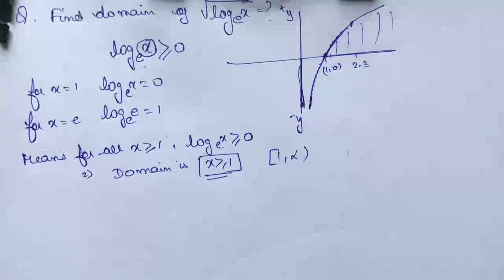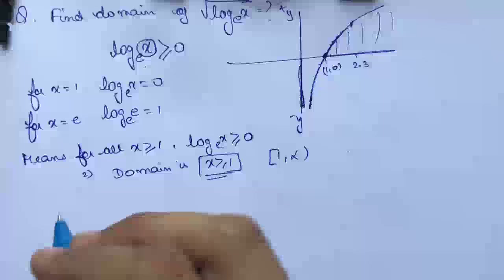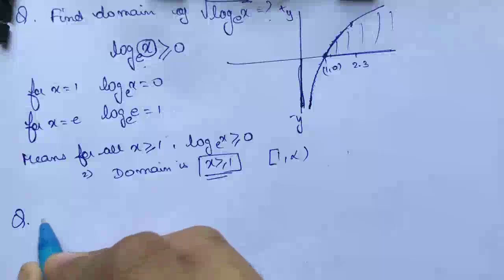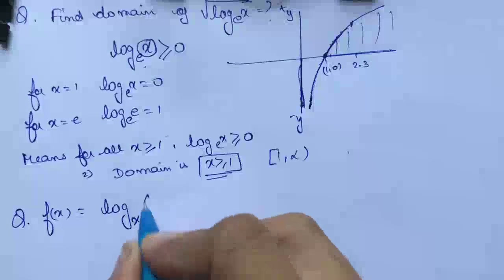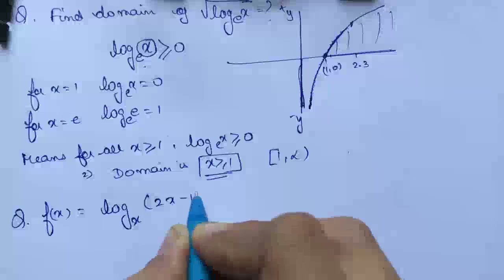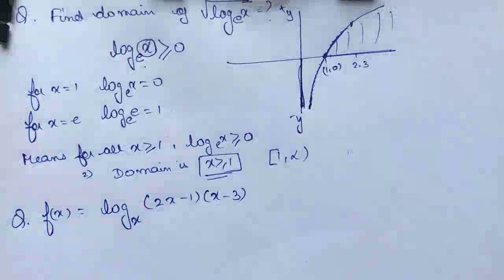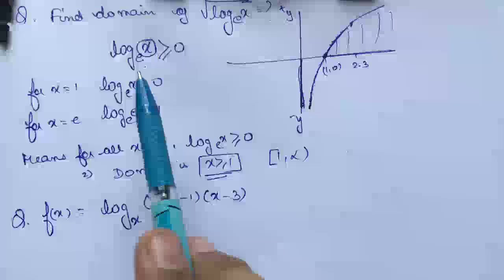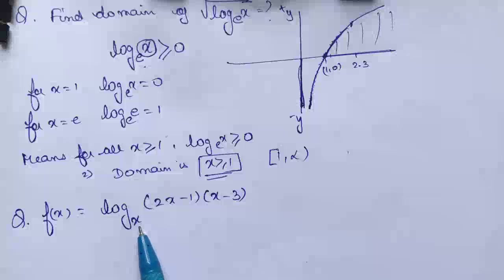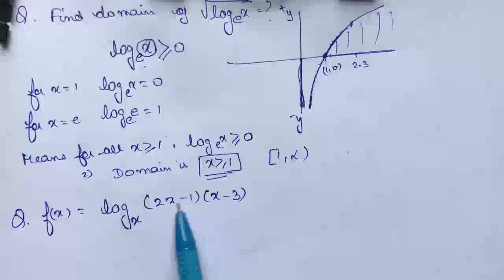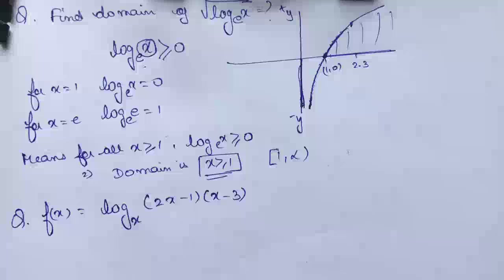So this is how you solve log questions. Let us suppose we have another question: f(x) = log base x of [(2x − 1)(x − 3)]. In the previous question the base was constant, but here the base is also a variable. So we need to apply conditions for both the base and the argument of the log.